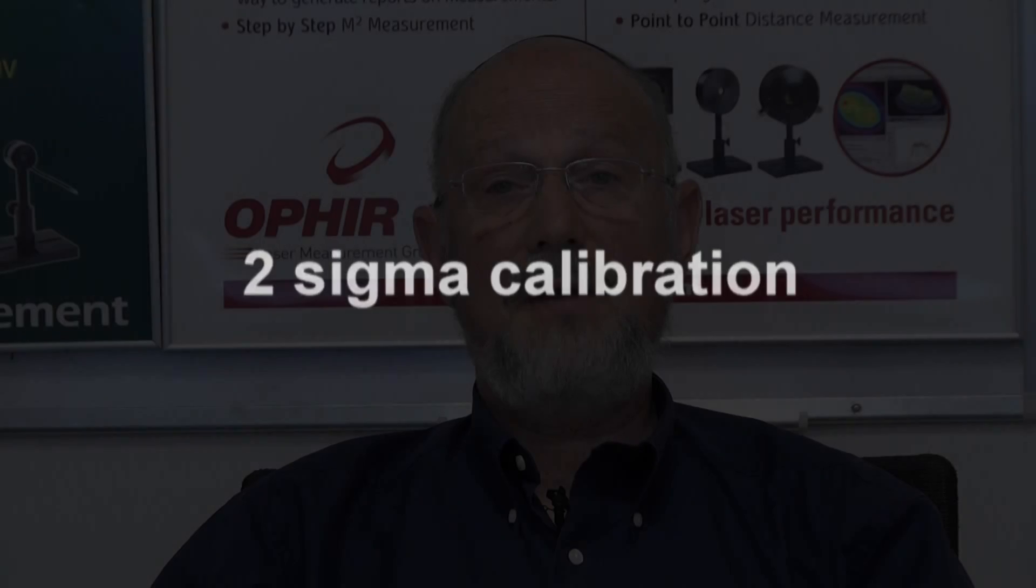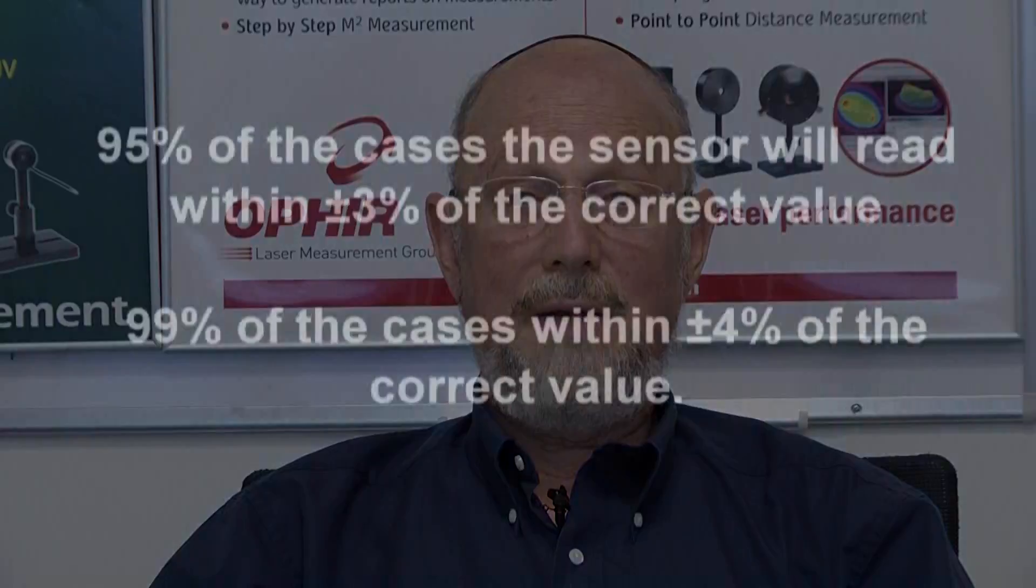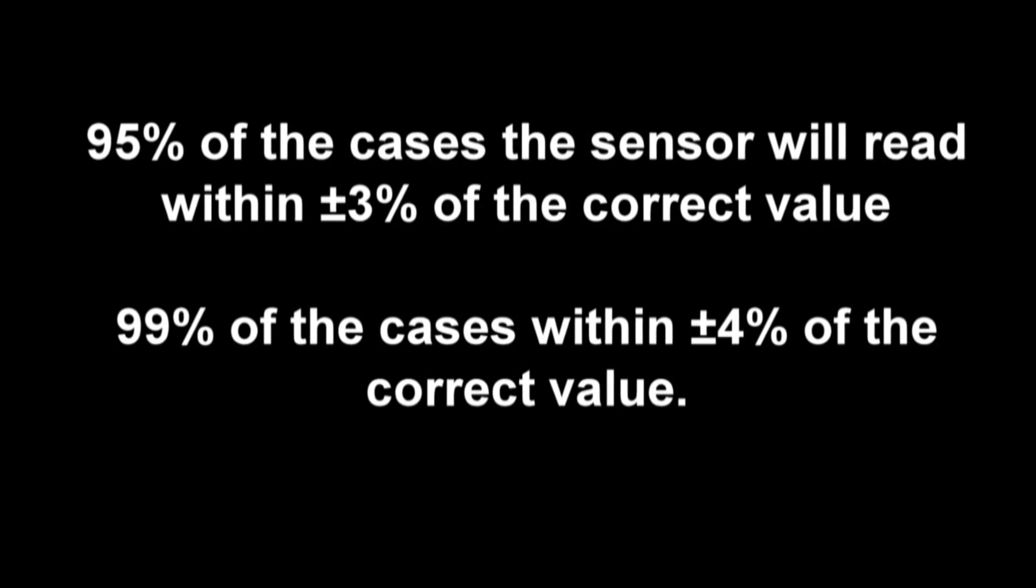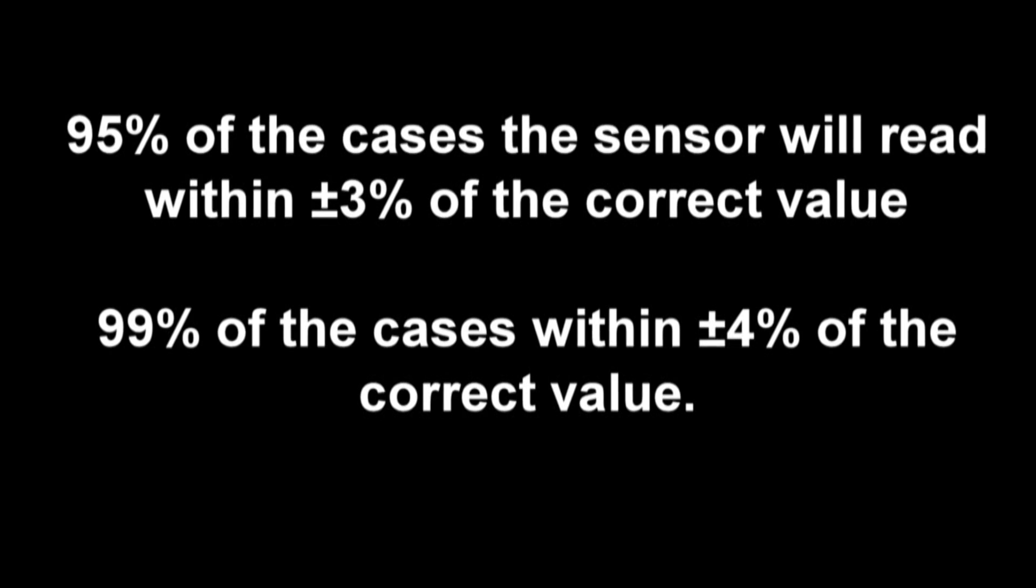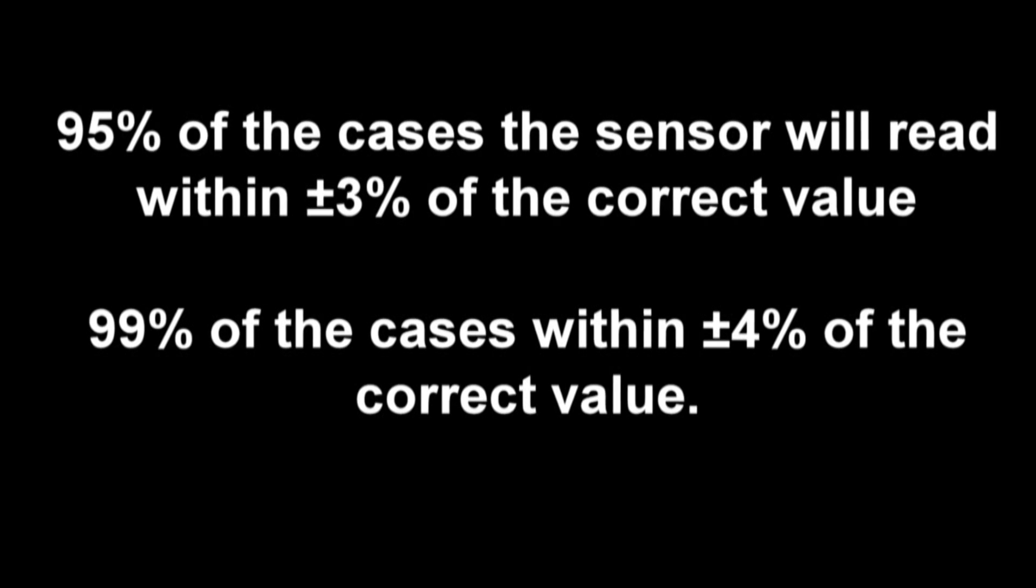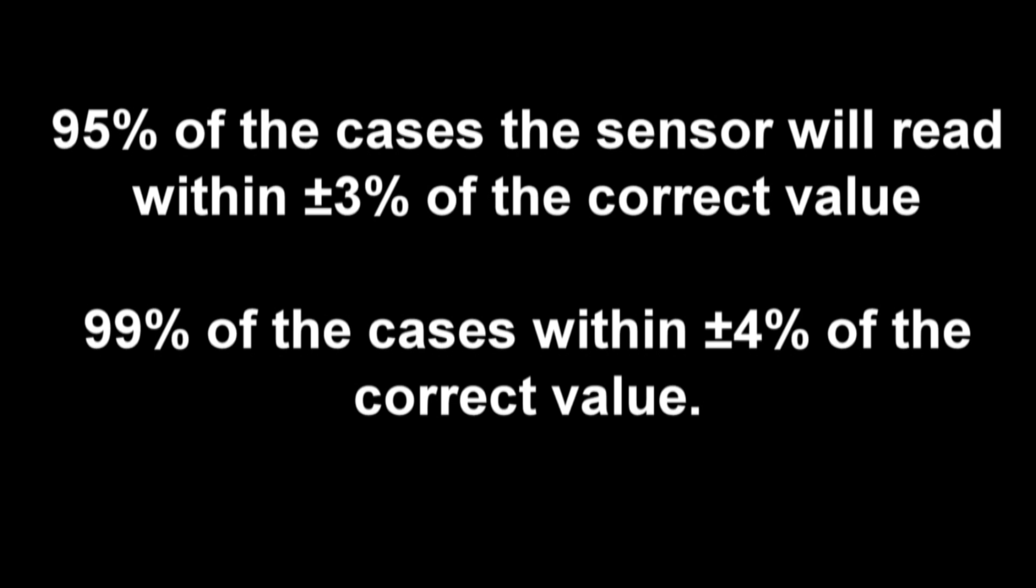When we state a calibration accuracy of plus or minus 3%, we are referring to what is statistically called two sigma calibration. This means that the errors are statistically random and therefore in 95% of the cases, the sensor will read within plus or minus 3% of the correct value and in 99% of the cases, it will read within plus or minus 4% of the correct value.